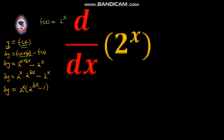Therefore, a small change in y is equal to 2^(x + δx) minus 2^x. Then we do some algebra: δy equals 2^x times 2^(δx) minus 2^x. Then we factor out 2^x and we have 2^x times (2^(δx) minus 1).